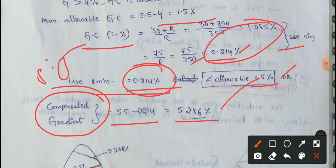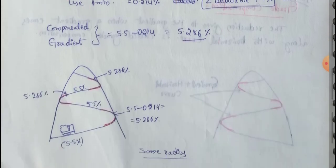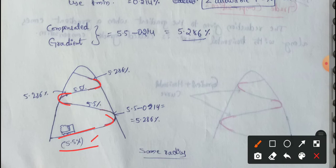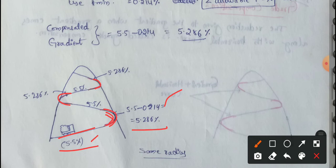Now, how we execute this using a diagram: here we have a hill area. We have a given rate of 5.5 percent, but here we have a turning, so that value is less. The compensated gradient reduction value is 0.214 percent, so the compensated gradient is 5.5 minus 0.214, which allows the vehicle to move smoothly. The compensated gradient value is the final answer for this type of model.